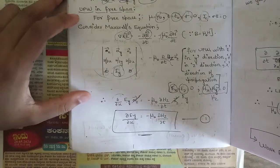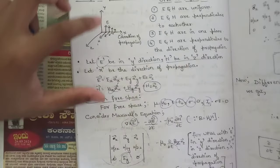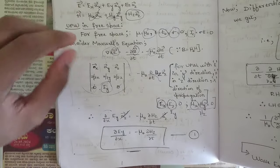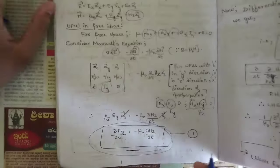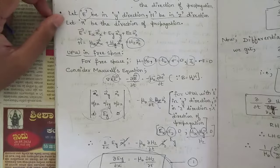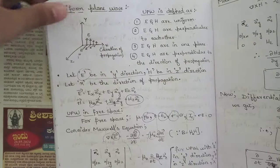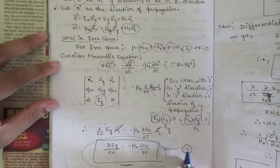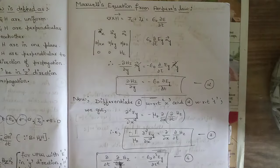Name this as Equation 1 — the plane wave equation obtained when we take E in the y direction and H in the z direction using Maxwell's equation for a uniform plane wave in free space. If they ask only for uniform plane wave propagation, writing up to this is enough. For a 10-mark question, further derivation is required, which is why this is named Equation 1.